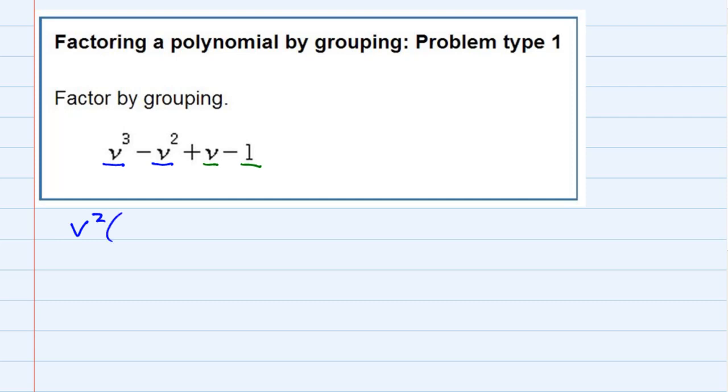So if I'm factoring that out, I would be dividing each one by v squared. In the first one that would simplify to be just v, and in the second one the v squared and the v squareds cancel. So v squared divided by v squared is one, bringing down the sign there.